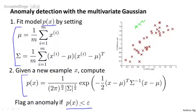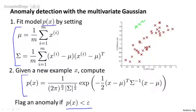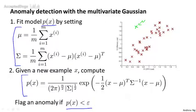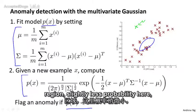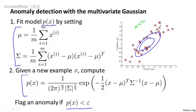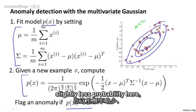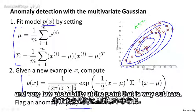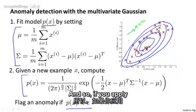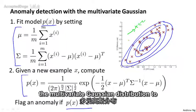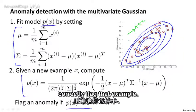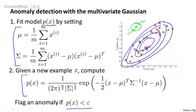It turns out that if you fit a multivariate Gaussian distribution to this dataset — just the red crosses, not the green example — you end up with a Gaussian distribution that places lots of probability in the central region, slightly less probability further out, and very low probability at the point that's way out there. And so, if you apply the multivariate Gaussian distribution to that example, it will correctly flag that example as an anomaly.